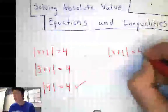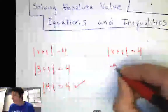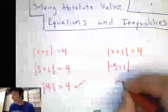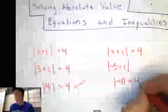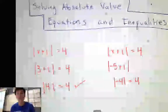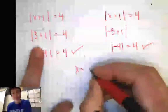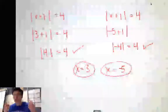But another possible answer for x, that might be a little harder to think about, is x could also be negative 5. If it was negative 5 plus 1 inside the absolute values, negative 5 plus 1 is negative 4. But the absolute value of negative 4 is positive 4 — negative 4 is 4 spots away from zero on the number line. So the absolute value of negative 4 equals 4 also works. There are two answers for x here: x could equal 3 or x could equal negative 5.